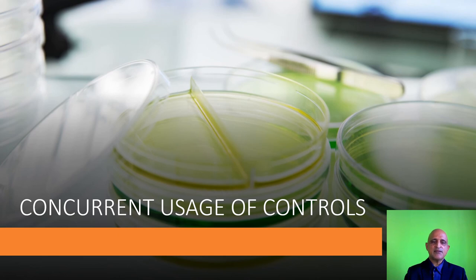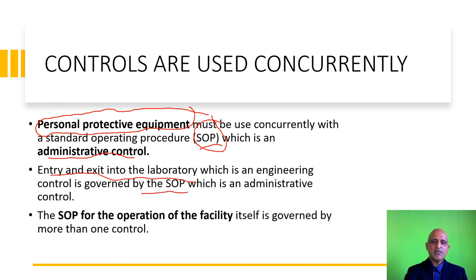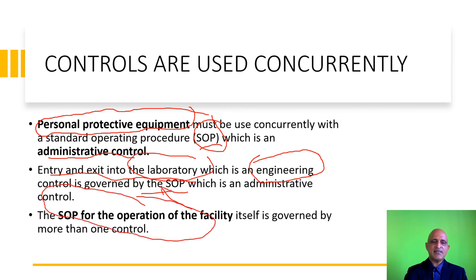Finally, we move on to the concurrent usage of controls. Controls are used concurrently. For instance, personal protective equipment must be used concurrently with the standard operating procedure for donning and doffing of PPE — the SOP is essentially an administrative control. Entry and exit into the laboratory is governed by an SOP, while the laboratory itself is an engineering control. The SOP for operation of the entire facility is governed by more than one control — this is how controls are used concurrently.